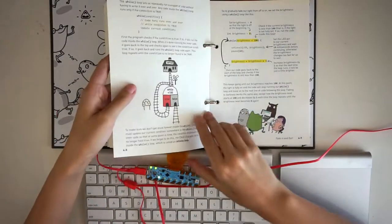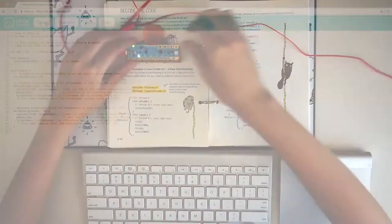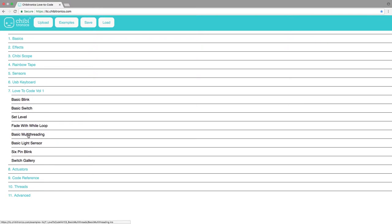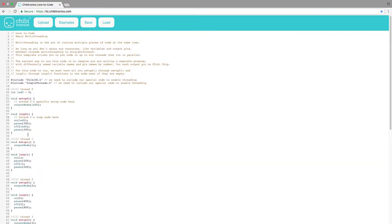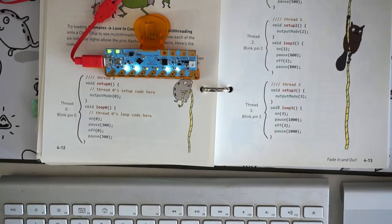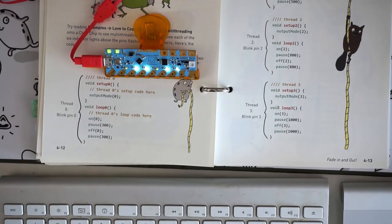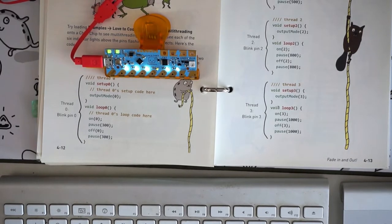After the while loop lesson, we learn how to use multi-threading to control all the lights at once. Let's preview the basic multi-threading example code. All six LEDs are doing something different. Each LED runs an independent thread with its own setup and loop functions. It's like having six chibi-chips in one!